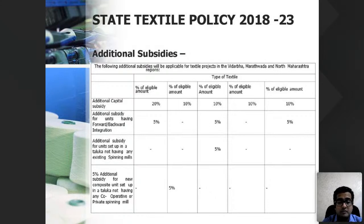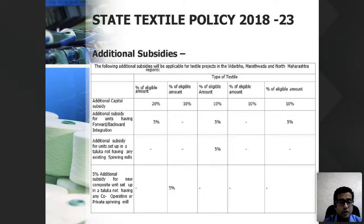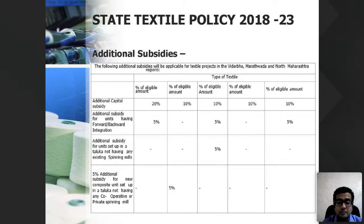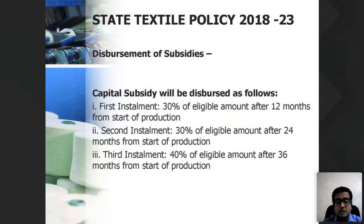This 75% subsidy can effectively repay the entire term loan. If you are putting up a unit of say 1 crore, 75 lakhs will be paid as subsidy by the government, so the whole term loan can be repaid. Further, if you are putting up forward and backward integration along with the unit, an additional 5% more is available, so a technical textile unit with forward integration can get up to 80% of machine cost as subsidy.